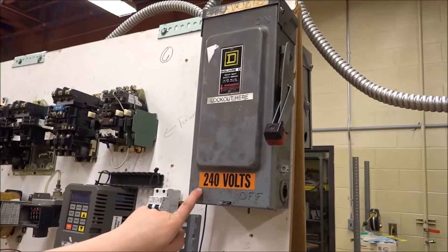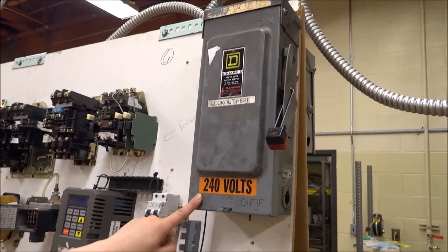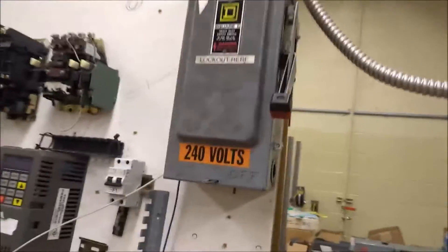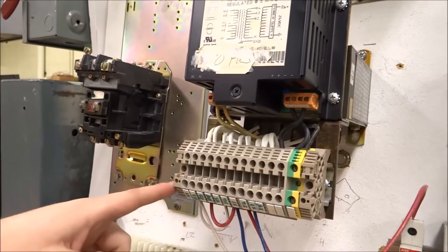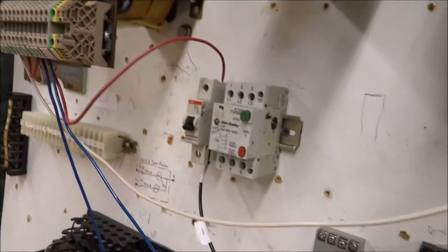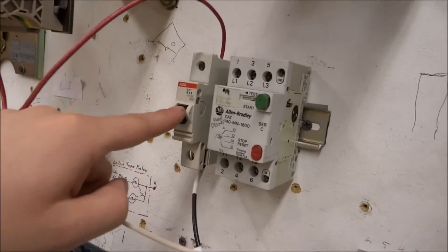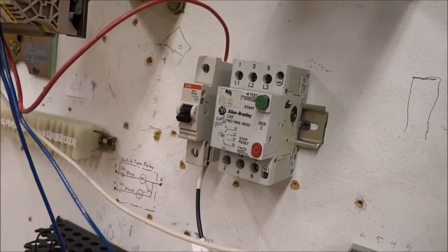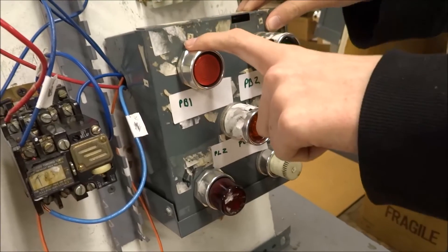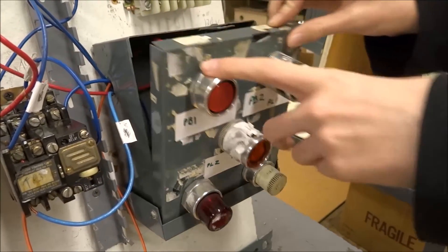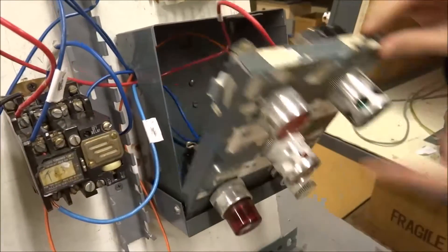In our panel box, we have 240 volts coming into our transformer. And from the 240 volts, it's getting reduced to 120 volts coming out of the transformer into the 15 amp breaker we have set. From there, into the stop button. The stop button goes to the start button, which is the green one.